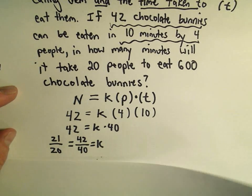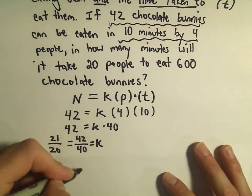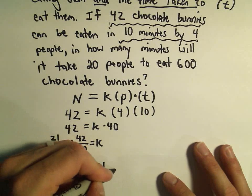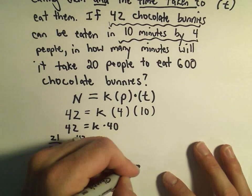Okay, so that tells us the equation we should be using. It says N equals K, which is 21 over 20 times P times T.